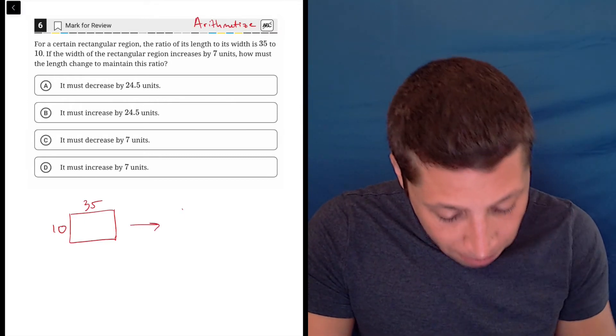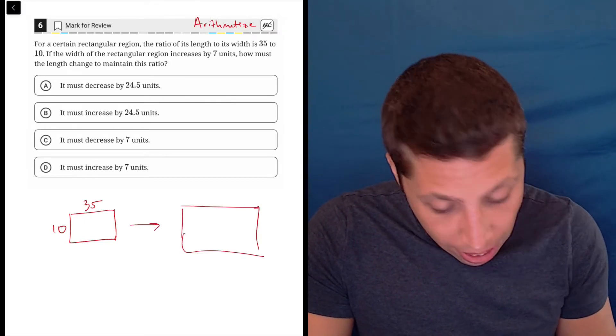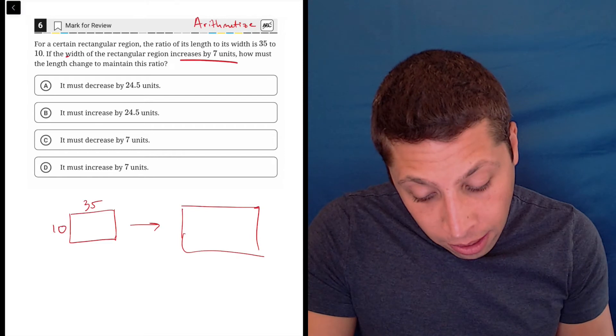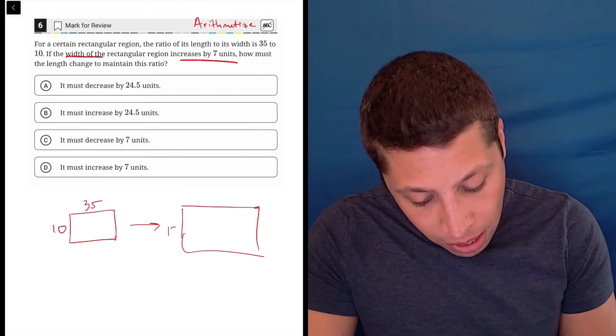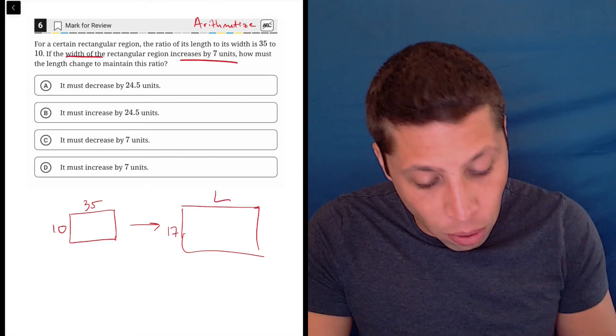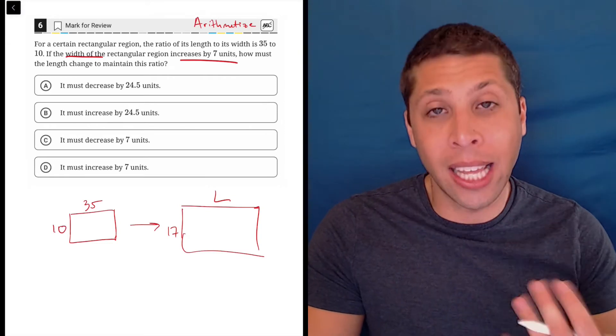Then we need to change some things. We need a bigger rectangle, and they are increasing the width by 7. So now we have a new width of 17, and we want to know how much the length needs to change.